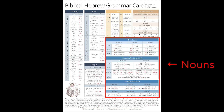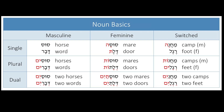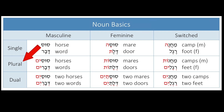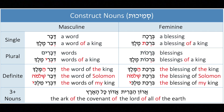The first major section in blue covers the nouns. With noun basics, you'll be able to differentiate a masculine noun from a feminine noun, and a singular noun from a plural noun.